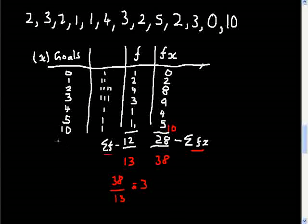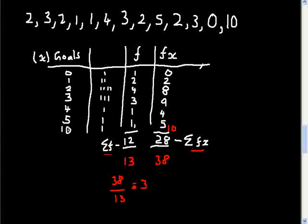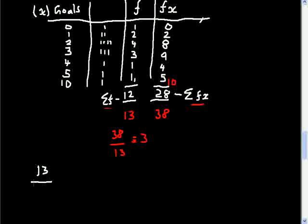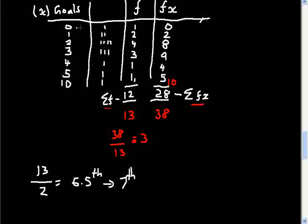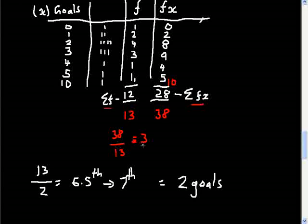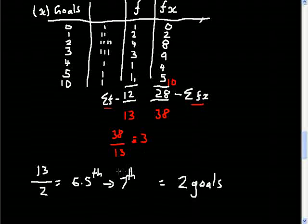In this instance you wouldn't want to use the mean — you'd look at the median, because the median eliminates the effect of extreme values. With 13 games, 13 divided by 2 is 6.5, so rounding up gives the seventh position, which is still in the 'two goals' category. The median hasn't changed even with that extreme value, while the mean jumped from 2.33 to 3.